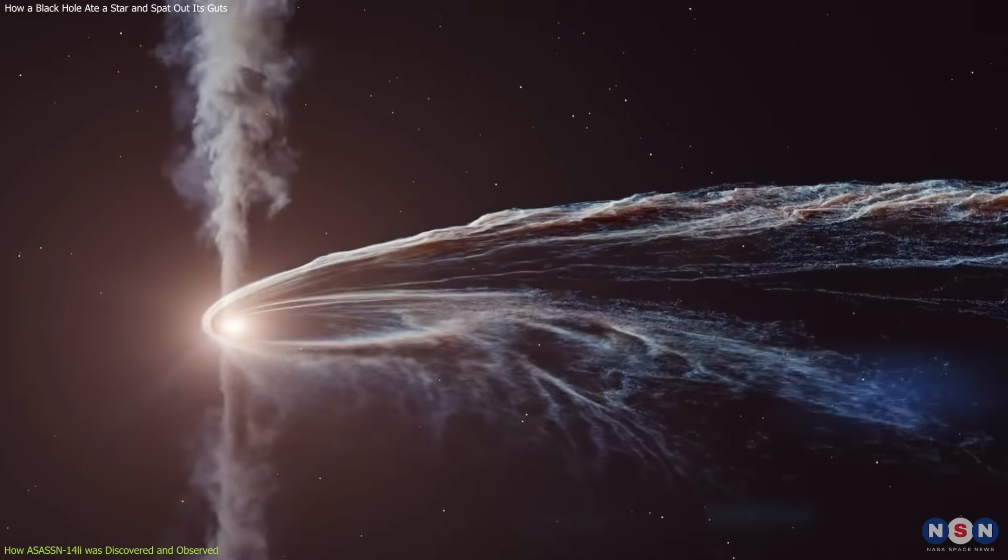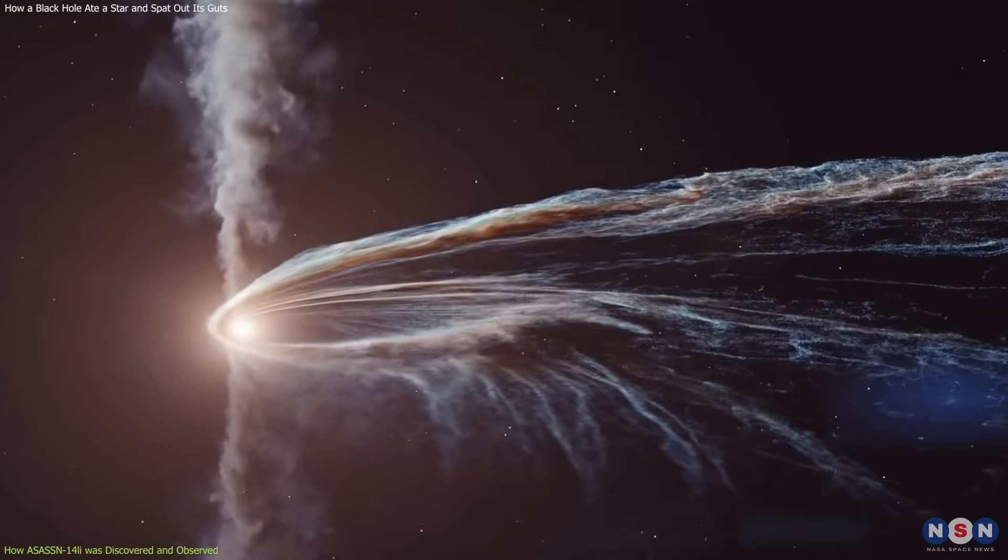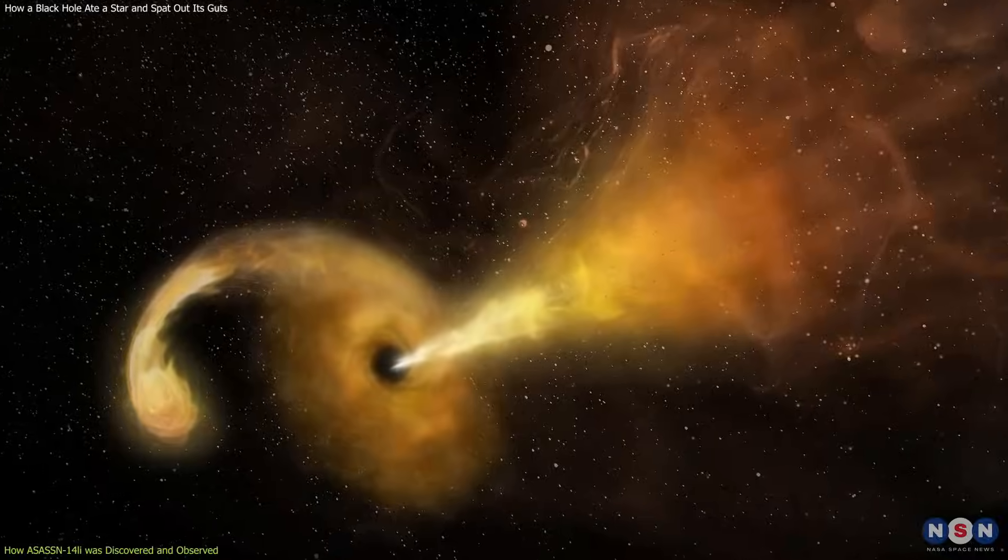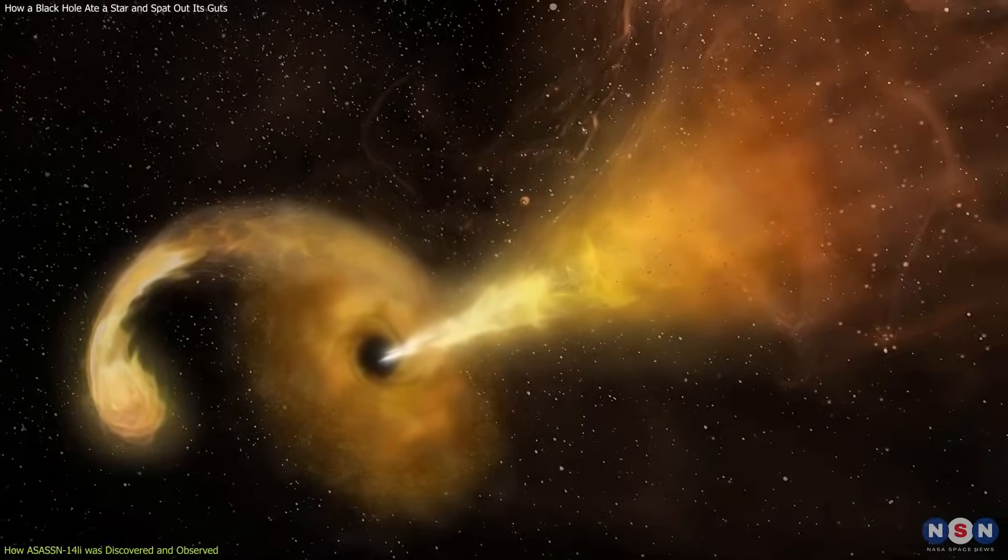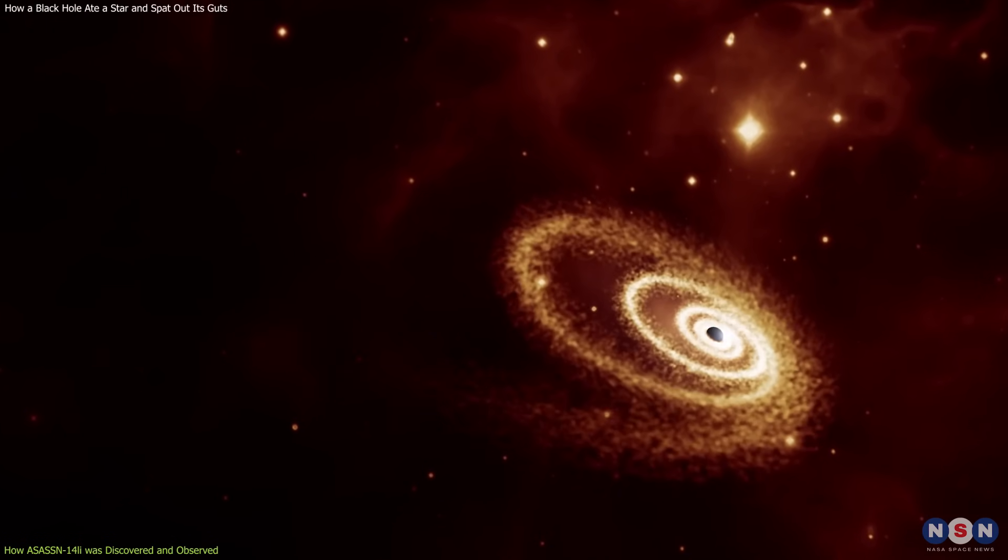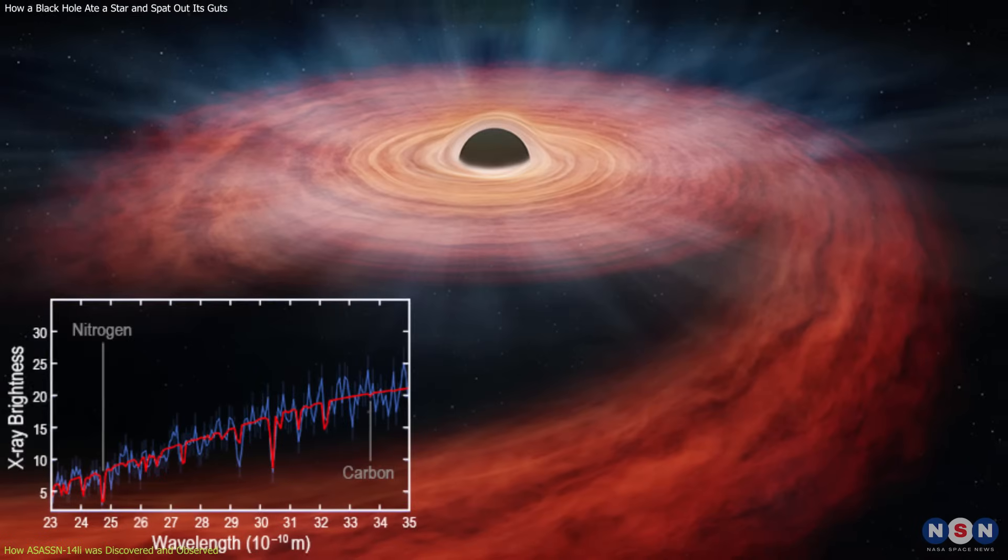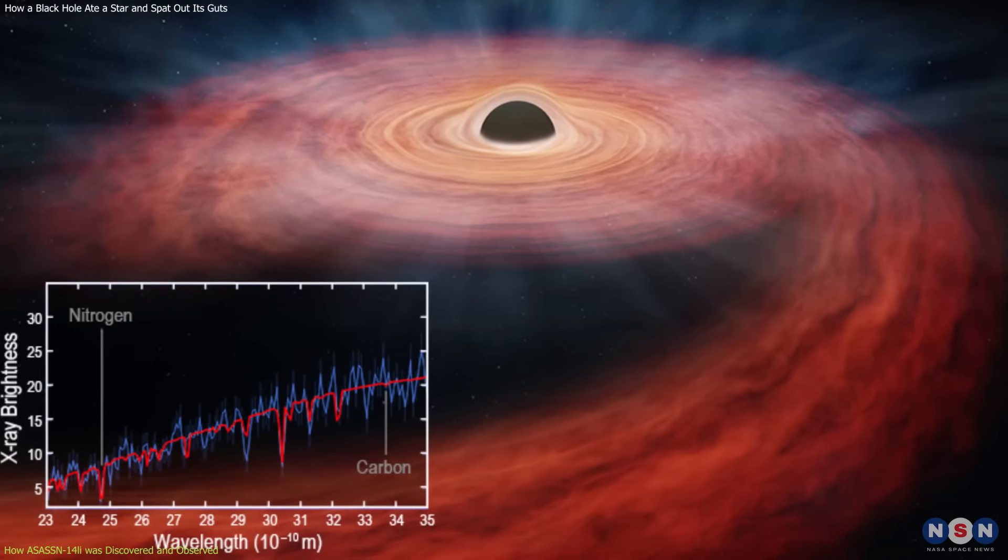They also showed how some of the star's material was ejected into space at speeds of up to 30,000 kilometers per second, forming jets or streams of gas that glowed brightly. ASASN-14Li was more violent and energetic than most TDEs, and it lasted for about a year, but to date it is still an active source of information.